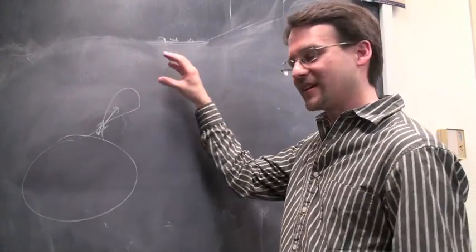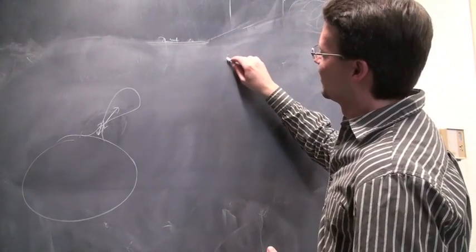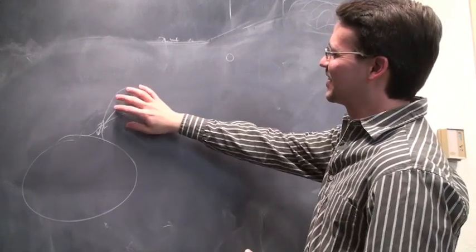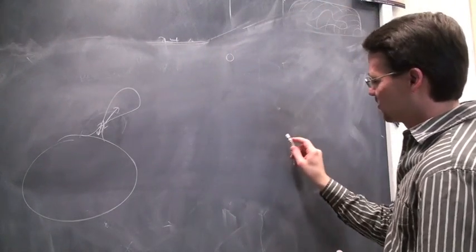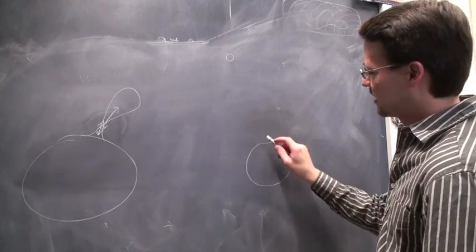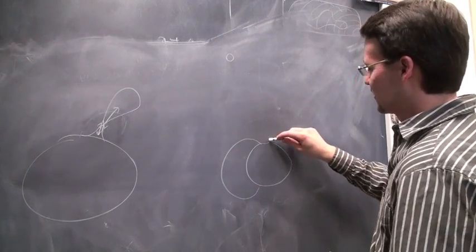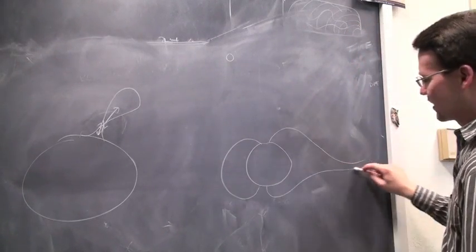One of these coronal mass ejections can pop off and, if the earth is out here, it comes out towards the earth. You blow up what the earth looks like and the earth has its own magnetic field. It looks like this.